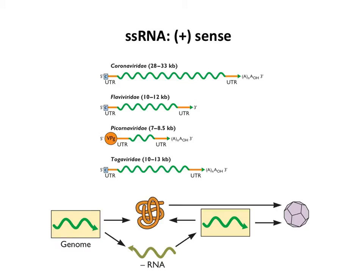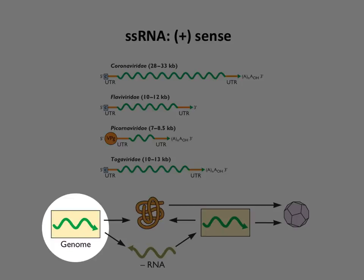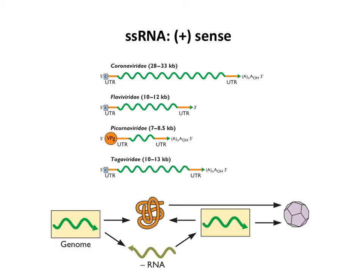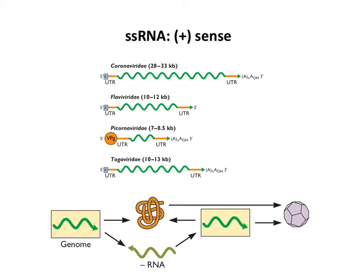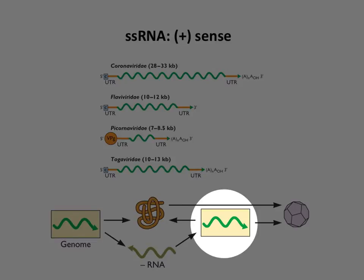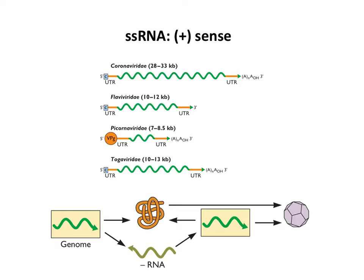So what's the strategy? Plus-sense RNA can be mRNA, so for these viruses the genome is translated as soon as it gets into the cell. The genome then has to be replicated—it goes from a plus to a minus strand copy, and then the minus strand is copied back into plus strands. The minus strand serves as a template to make more plus strands. That's the plus-sense strategy.